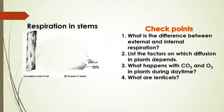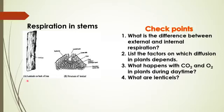Respiration in the stem: there are small pores found on the stem called lenticels. These structures are responsible for gaseous exchange in the stem, just like stomata present on the leaves. By the diffusion process, the stem takes in oxygen from higher concentration and releases carbon dioxide to the outside due to the concentration gradient.